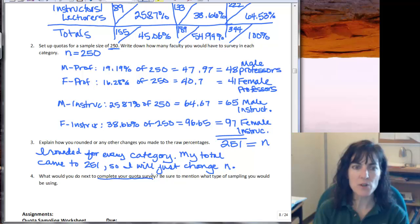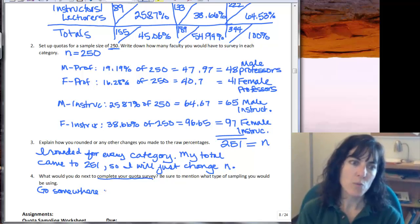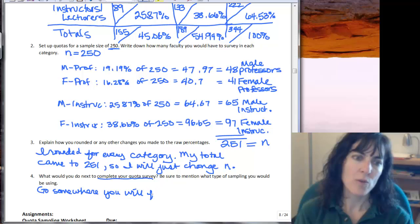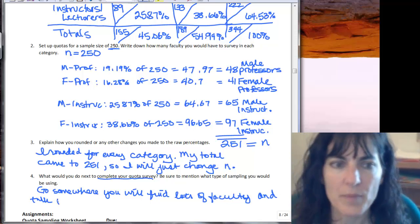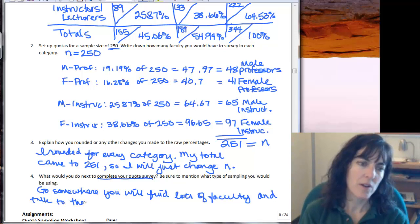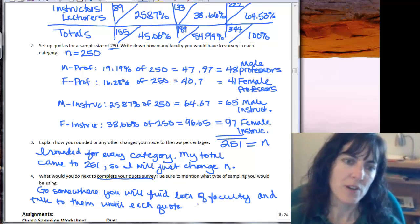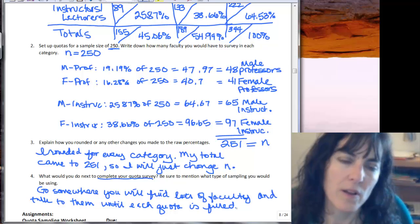And then what do I do next to complete my quota survey? What do you do for a quota? Now you know you need to talk to 48 male professors, 41 female professors, 65 male instructors, 97 female instructors. So the next thing that you do is you go somewhere you will find lots of faculty and talk to them until each quota is filled.